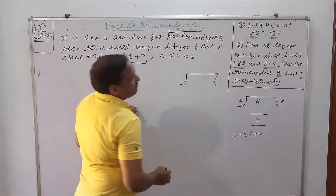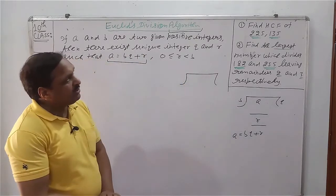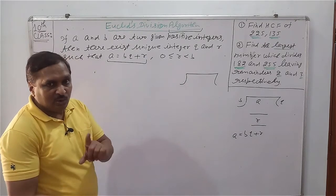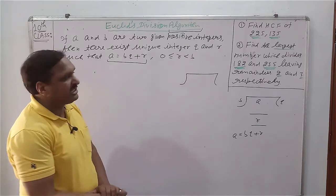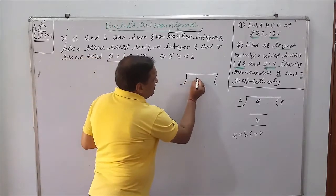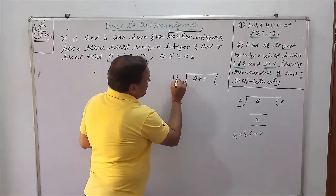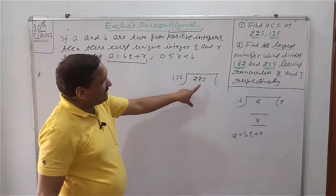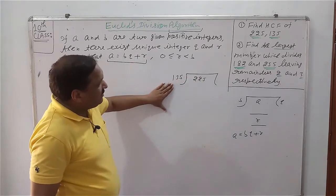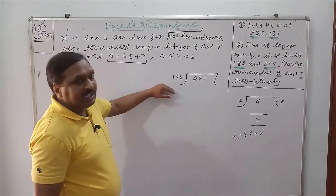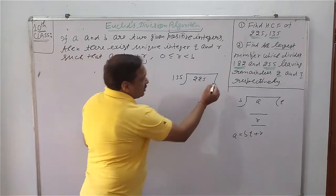We want to find HCF of 225 and 135 by long division method. So now 225 and 135, because 225 is greater than 135, so we take 225 as dividend and 135 as divisor.